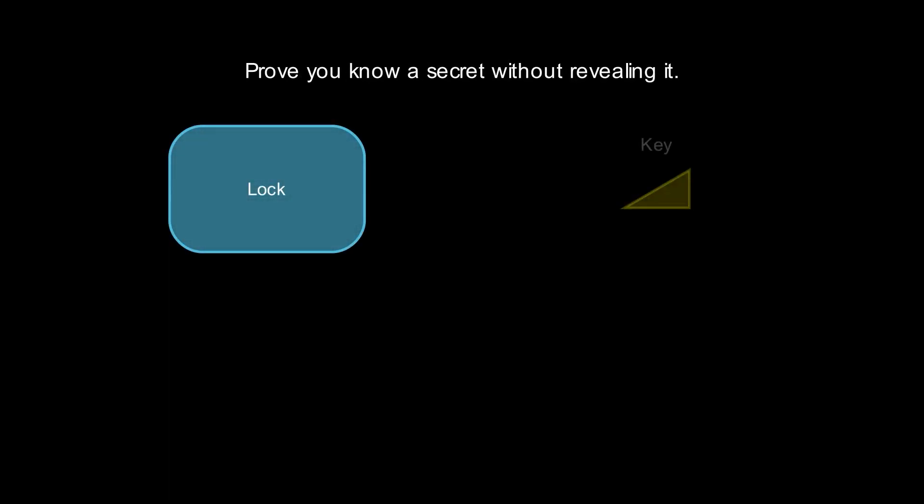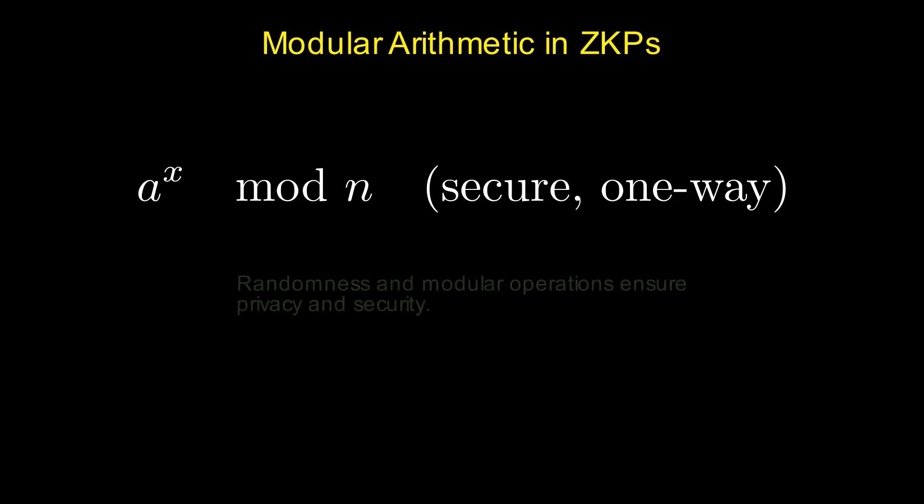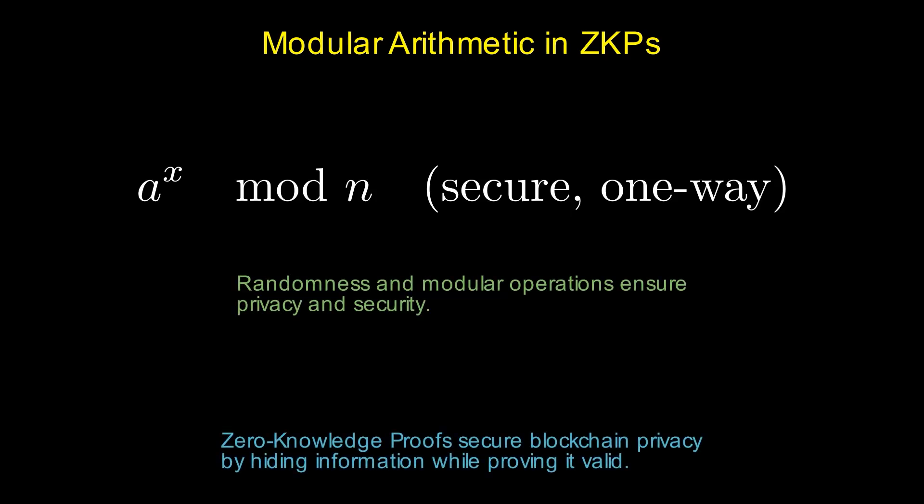Zero Knowledge Proofs let someone prove they know a secret without revealing it. This concept, formalized by Shafi Goldwasser and others, uses modular arithmetic and randomness to ensure security and privacy. Imagine this: you need to prove you know the combination to a lock without revealing it. The math represents properties of your knowledge while keeping the information hidden.